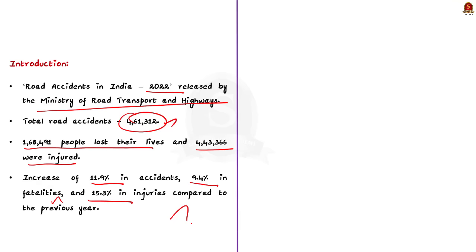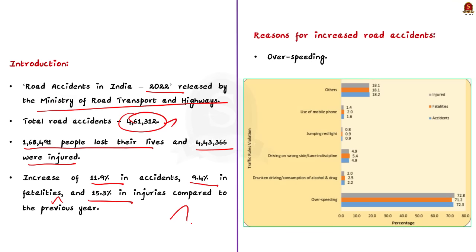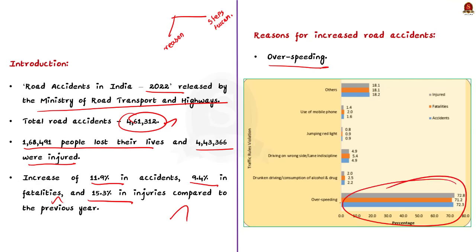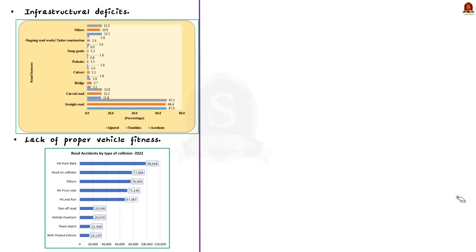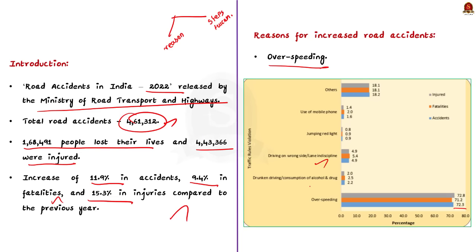Now moving to the main body. Split the body into two parts. In the first part, write about reasons for the high number of road accidents and fatalities. The first reason is over-speeding, which accounted for 72.3% of total road accidents, 71.2% of total deaths and 72.8% of total injuries. Other reasons include use of mobile phones, jumping red lights, and driving on the wrong lane.